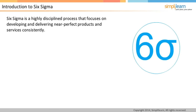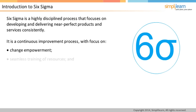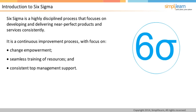Six Sigma is a highly disciplined process that focuses on delivering near-perfect products and services consistently. Its strength is that it is a continuous improvement process with an unwavering focus on change empowerment, seamless training of resources, and continuous top management support. These three are known as the pillars of Six Sigma. If Six Sigma is implemented methodically, it will give sustained results for any process.